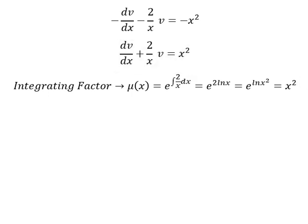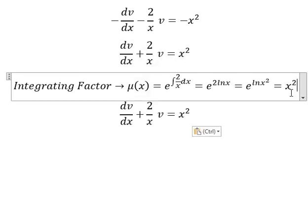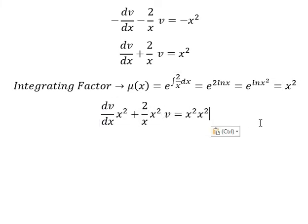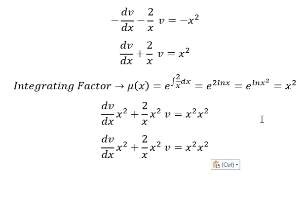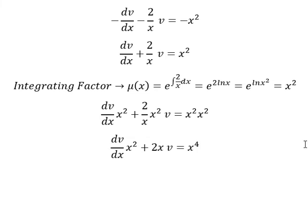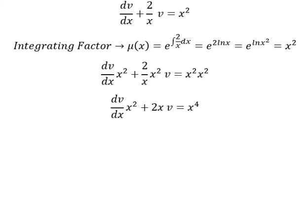That means we multiply both sides by x square. So this one we have 2x, this one we have x to the power of 4. Next we put the integration for both sides.